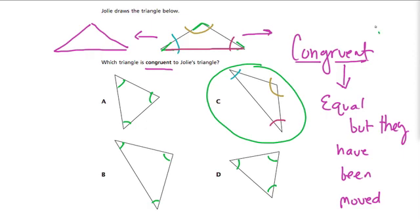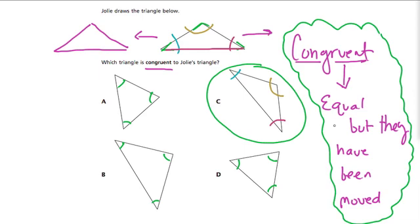Remember, congruent means essentially all of the angles and all of the sides are exactly the same. But the shape, because it refers to a shape, is somewhere else. And that's what congruent means. All right, thanks.